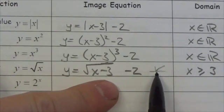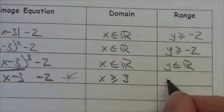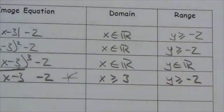The range here originally started at greater than or equal to 0. Well, if you move that 2 down, this is going to be y is greater than or equal to negative 2.